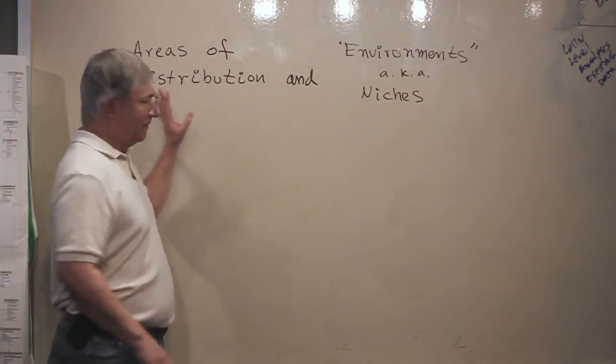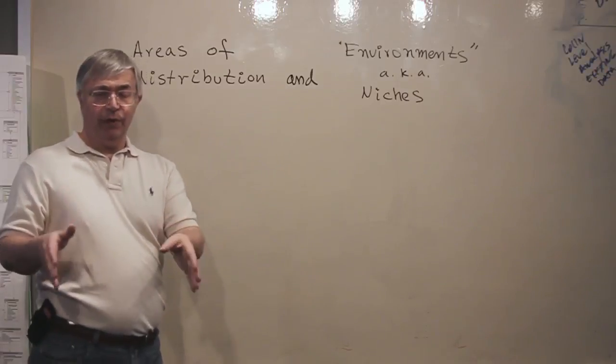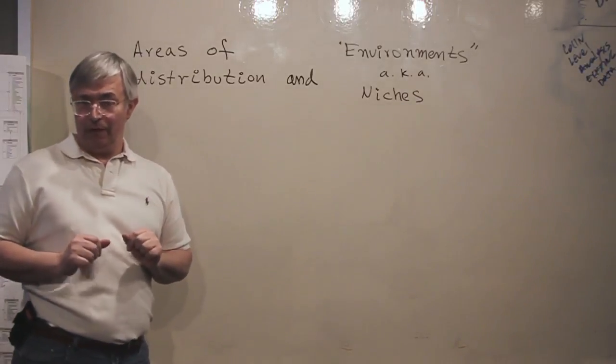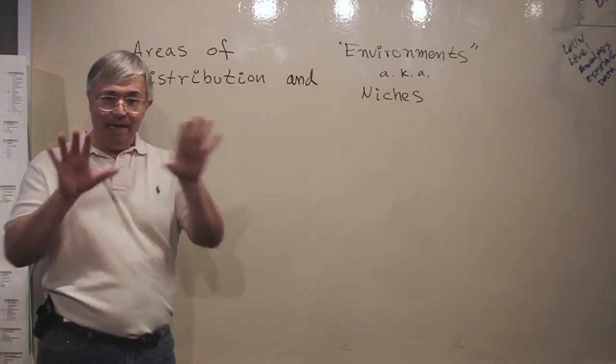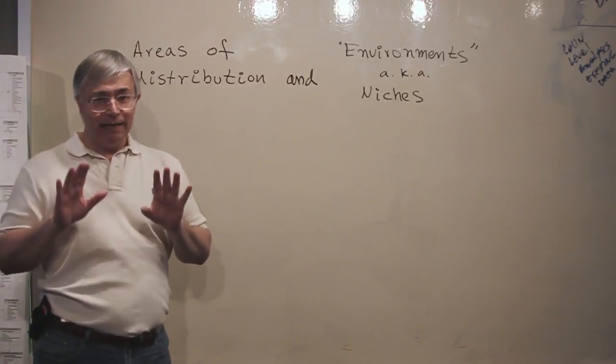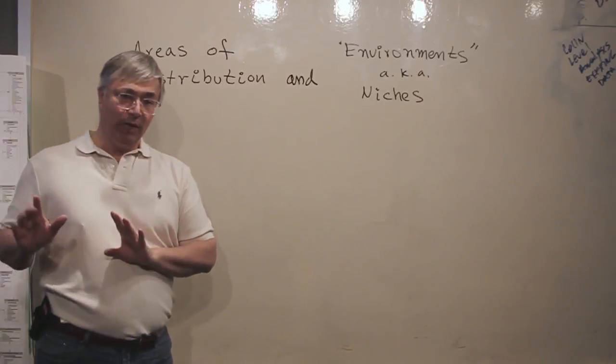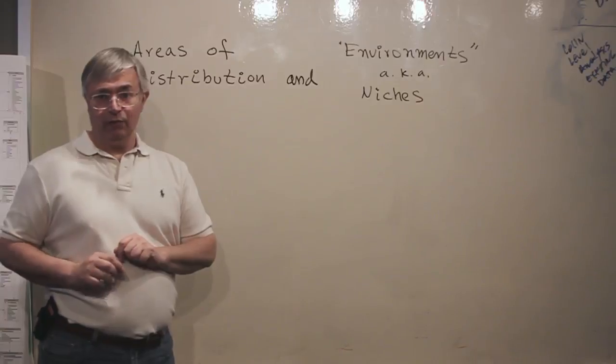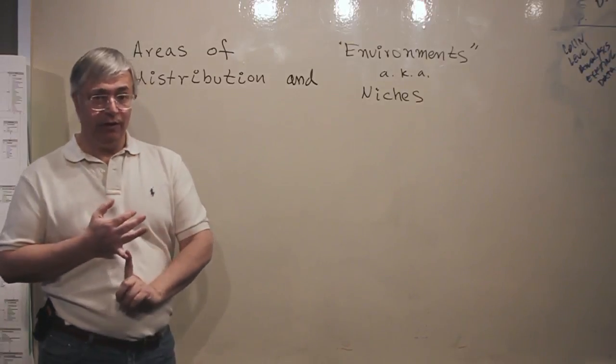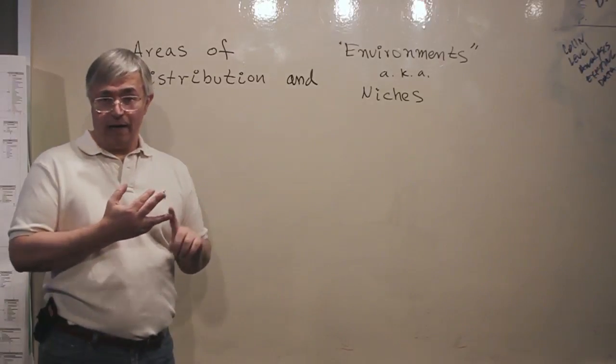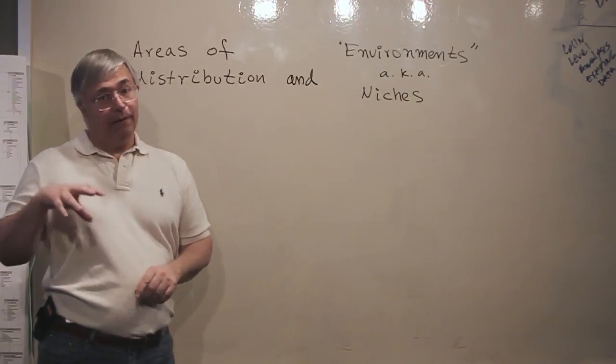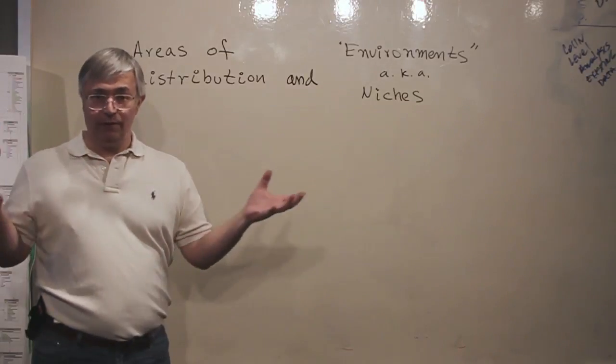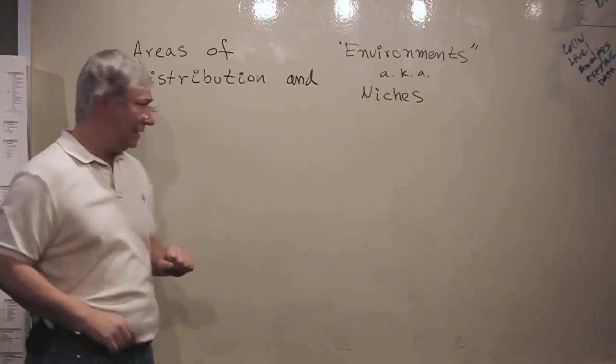So the first thing we're going to do in this brief video is to discuss the main ideas and the main types of things that you can model. It's up to you to decide whether you are going to model a potential area of distribution or an actual occupied area or the niches of those different concepts and we're going to discuss that.